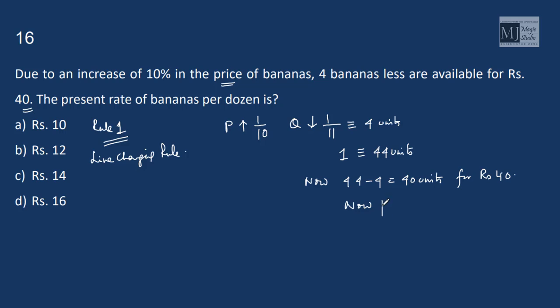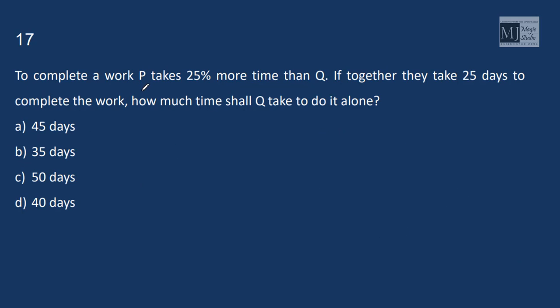Initially 44 units were purchased. Now 44 minus 4 that is only 40 units are purchased for rupees 40. That means now the price per unit is rupee 1. The question asked is what is the present rate of bananas per durian? Durian means 12 units. So the price of 12 units now is rupee 1 into 12 that is rupees 12.